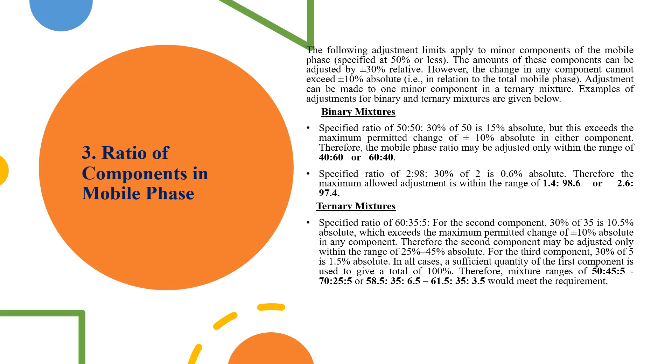So the 10% of absolute, that is the 10% of 100% because 100% is the total composition of the mobile phase. So adjustment can be done to one minor component in a ternary mixture.